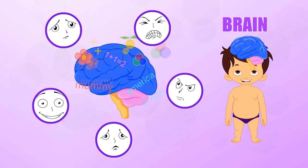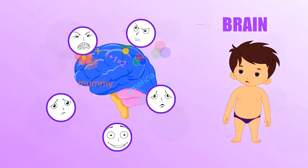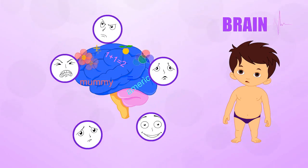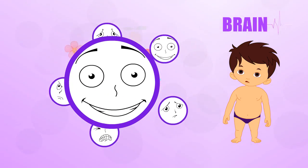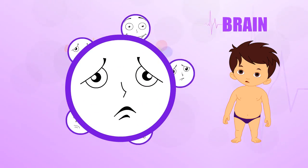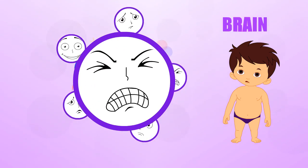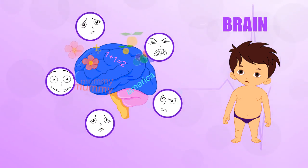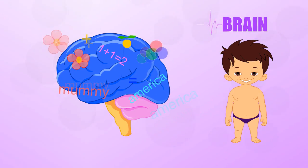With all the other things it does, is it any surprise that the brain runs your emotions? Maybe you got the exact toy you wanted for your birthday and you are really happy. Or your friend is sick and you feel really sad. Or your little brother messed up your room and you are really angry. Where do these feelings come from? Your brain of course.